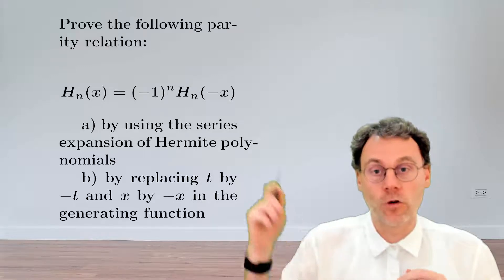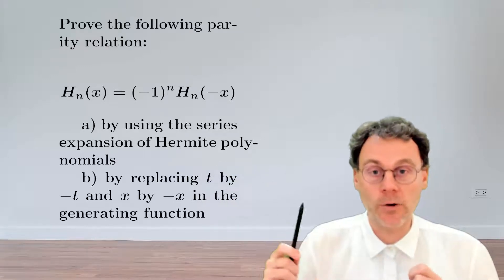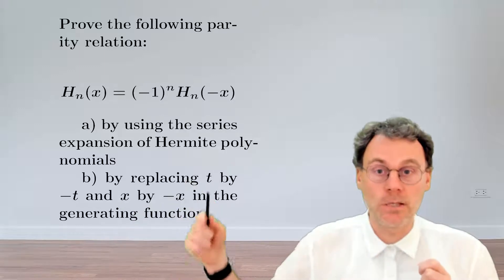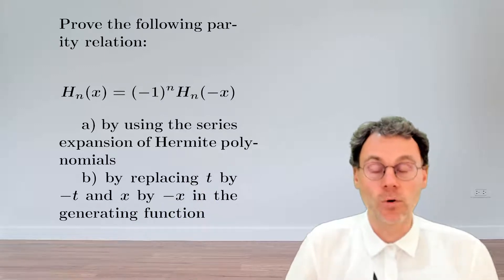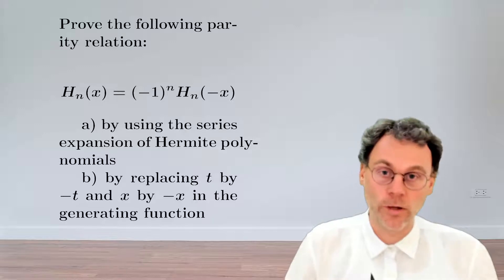One of them is just looking at the formula for the Hermite polynomials directly, and the other one is messing around with the generating function. So pause the video and unpause when you've solved this.